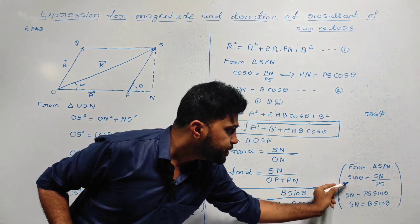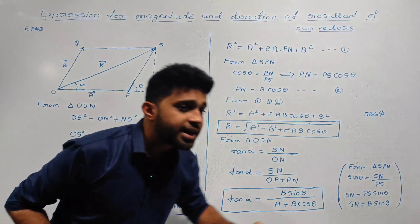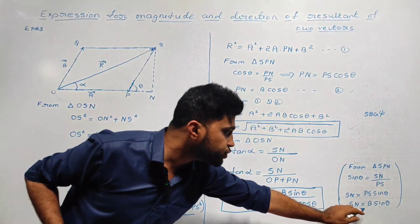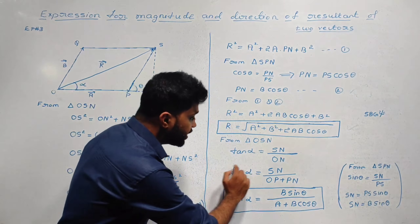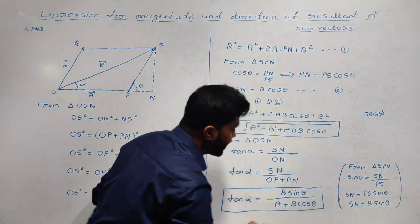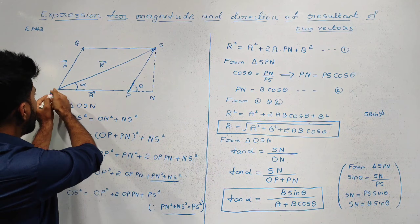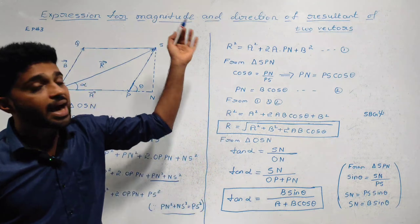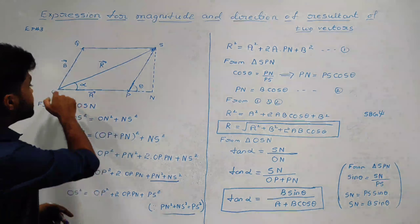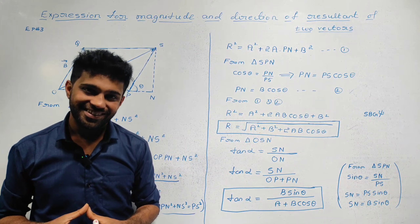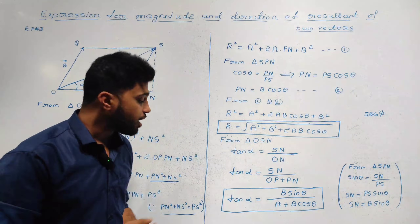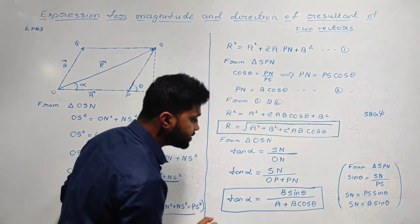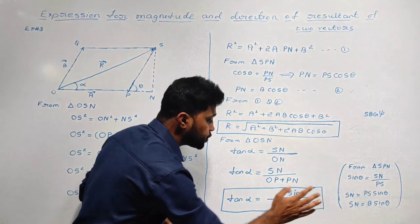From triangle SPN, sin theta equals SN divided by PS. So SN equals PS sin theta, and since PS equals B, SN equals B sin theta. Therefore, tan alpha equals B sin theta divided by (OP + PN), which equals B sin theta divided by (A + B cos theta). That gives the direction of the resultant.